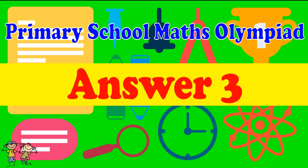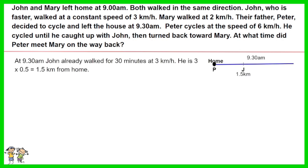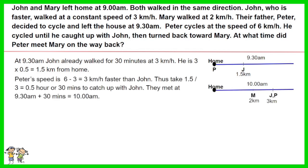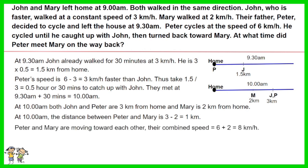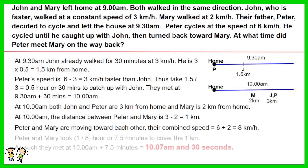Answer for question 3. At 9:30 a.m. John had already walked for 30 minutes at 3 km per hour, so he is 1.5 km from home. Peter's speed is 6 minus 3, which is 3 km per hour faster than John. It takes 1.5 divided by 3, which is 0.5 hour or 30 minutes, to catch up with John. They met at 9:30 a.m. plus 30 minutes, which is 10 a.m. At 10 a.m., John and Peter are 3 km from home and Mary is 2 km from home. The distance between Peter and Mary is 1 km. Since both are moving toward each other, their combined speed is 6 plus 2 equals 8 km per hour. They cover 1 km in 1/8 of an hour or 7.5 minutes, meeting at 10:07:30 a.m.